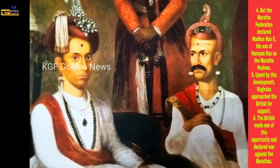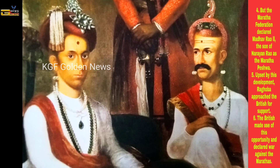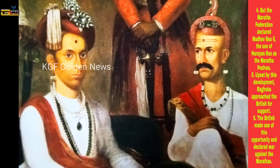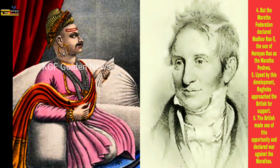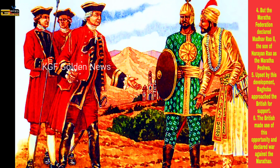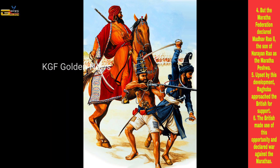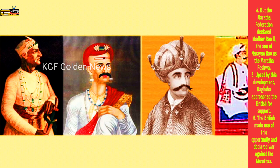Point 4 — But the Maratha Federation declared Madhav Rao II, the minor son of Narayan Rao, as the Maratha Peshwa. Point 5 — Upset by this development, Ragoba approached the British for support. Point 6 — The British made use of this opportunity and declared war against the Marathas.